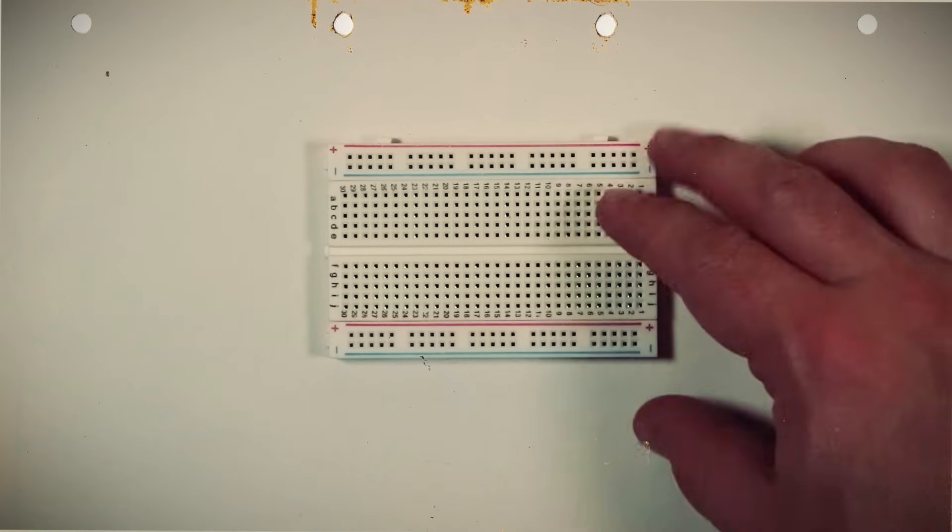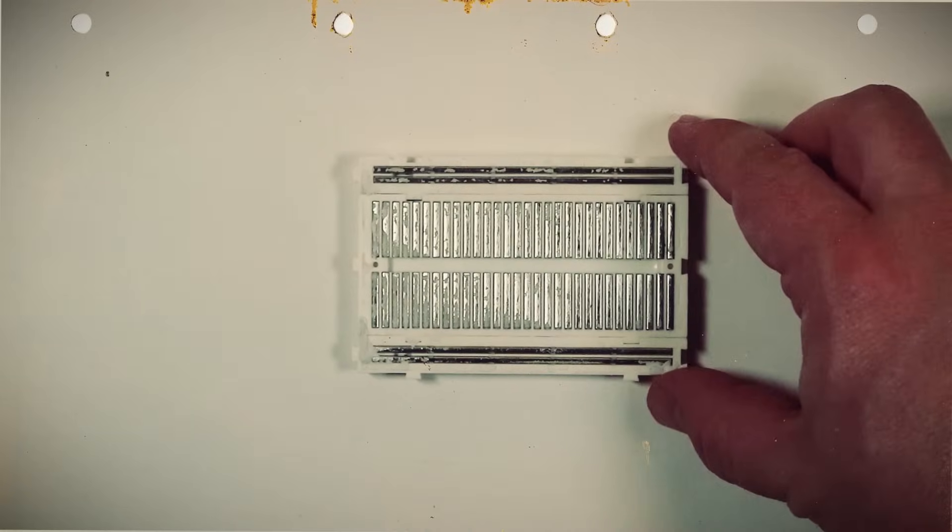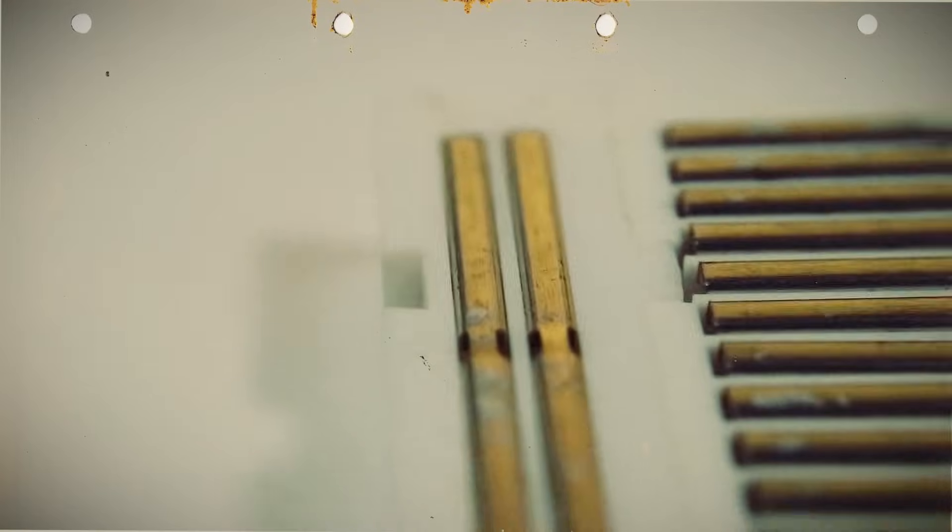If we take the back off of the breadboard, we can see that the two rows each have a single metal strip that connects all the positive holes and one that connects all the negative holes. That means that no matter which hole you plug into along the board, it will be connected to the corresponding current.